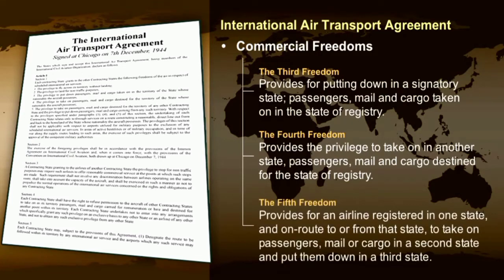A fifth freedom provides for an airline registered in one state, and en route to or from that state, to take on passengers, mail and cargo in a second state, and put them down in a third state.